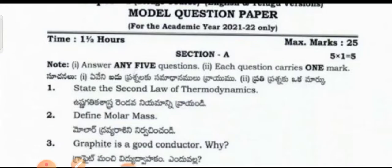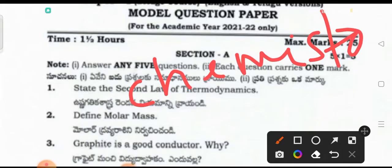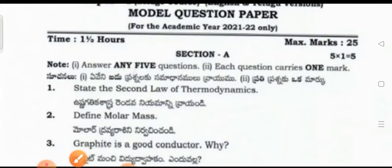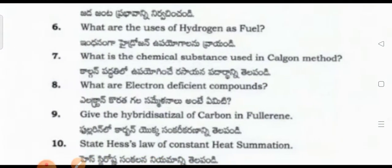So till now I have shown the complete physics section. Now I am going to show the chemistry model question paper for the second year students in the physical science paper. Chemistry Section A questions include: What is the chemical substance used in the Calgon method? What are the electron deficient compounds? Give the hybridization of carbon.